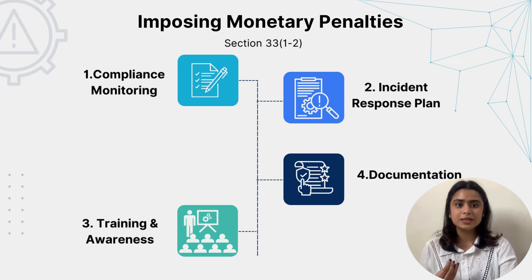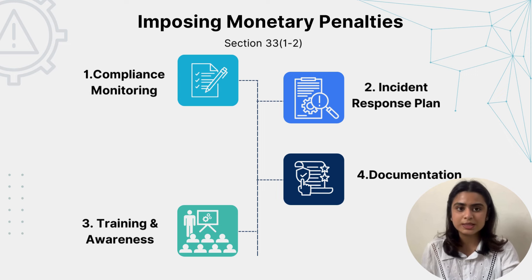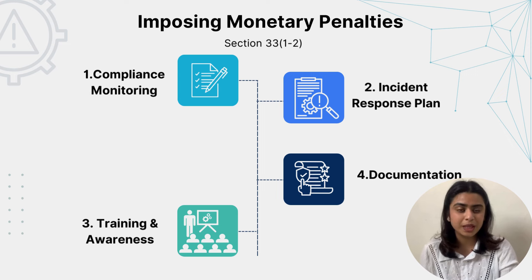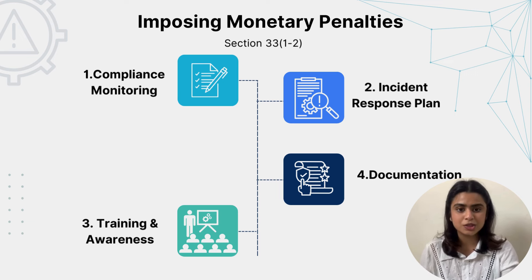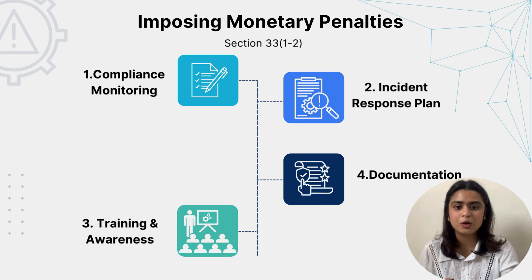Second, have an incident response plan. We need to develop a response plan to address breaches promptly, minimizing penalties. For example, in the Equifax data breach, they implemented an incident response plan that includes immediate notification, corrective measures, and public communication, which helped reduce the fallout. Organizations need to have a well-prepared incident response plan that mitigates risk and demonstrates the organization's commitment to compliance.